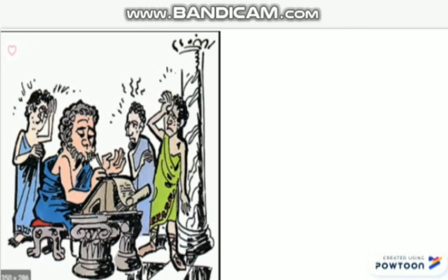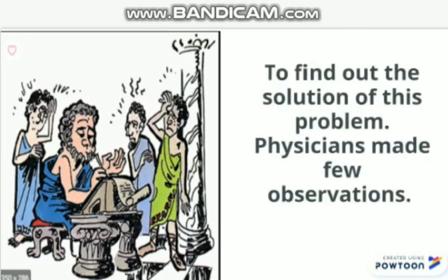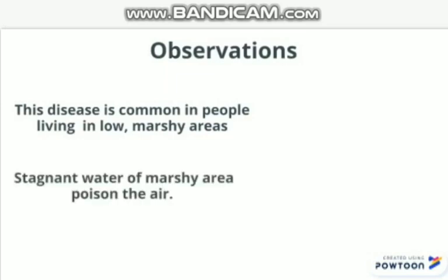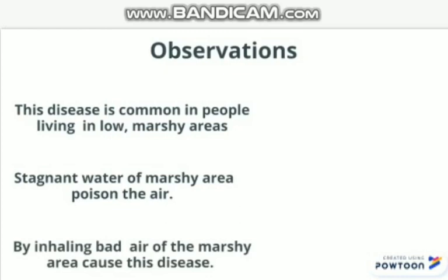To find out the solution of this problem, physicians made a few observations at that time. The observations were: this disease is common in people living in low marshy areas. Stagnant water of marshy areas was believed to poison the air, and by inhaling the bad air of the marshy area one could get the disease.